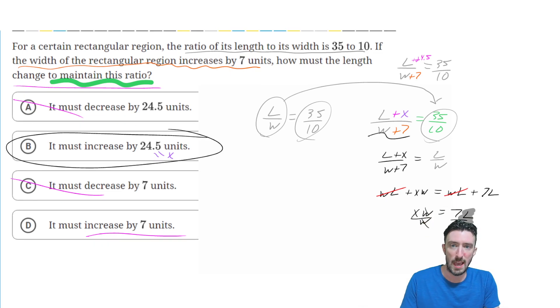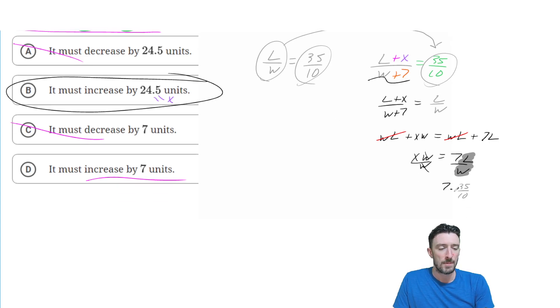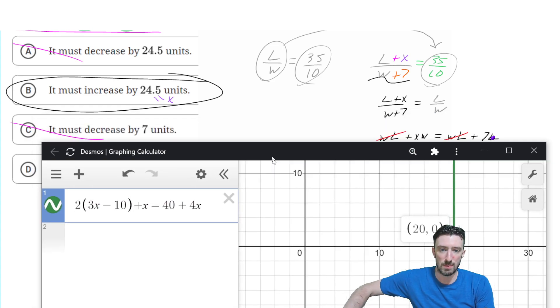So what we have to do is replace this L over W with the 35 over 10. And now we've got times seven. So now seven times 35 over 10. Well, what would that come out to? Let's just ask Desmos.